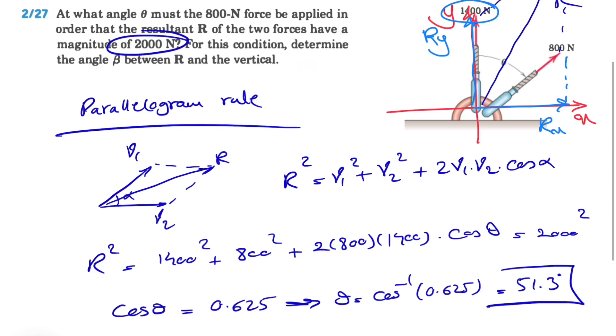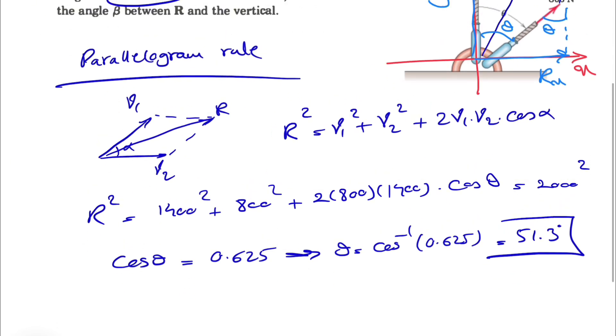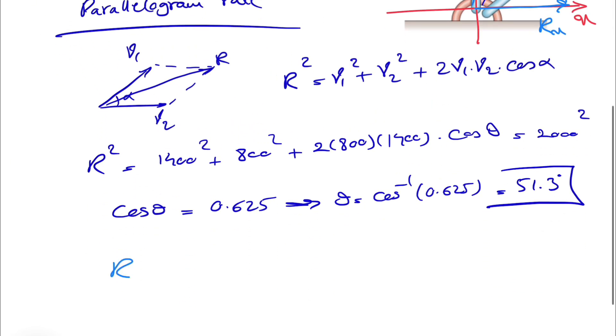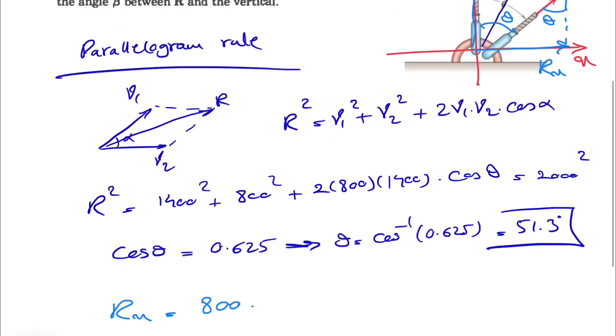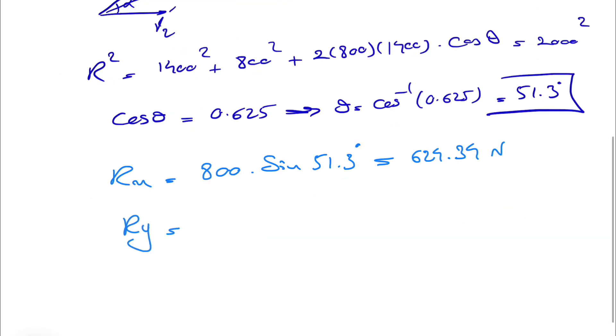That's pretty easy. We know if this angle is theta, Rx would be simply 800 times sine of 51.3. So what we get for Rx is 624.34 newtons.